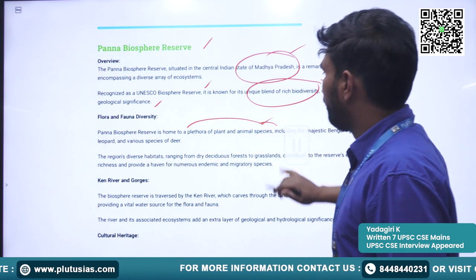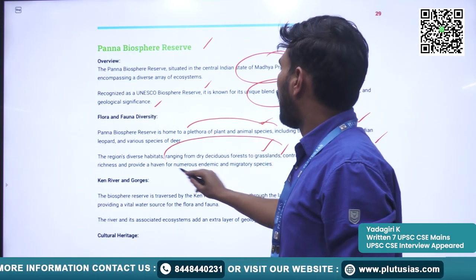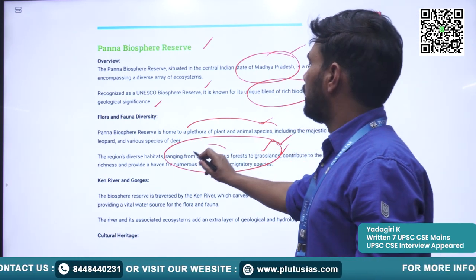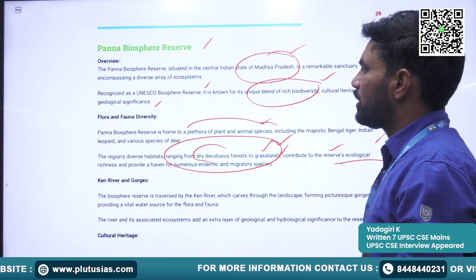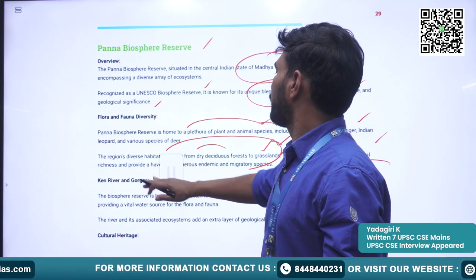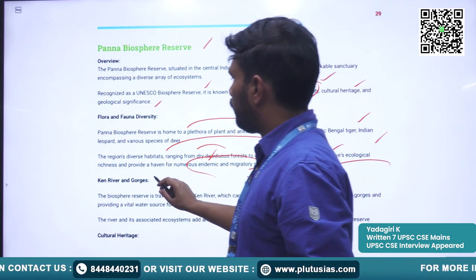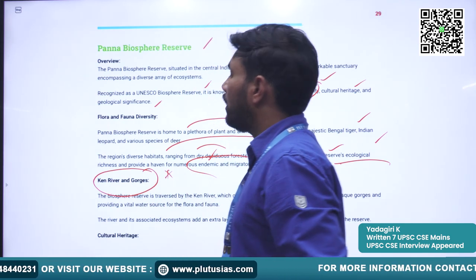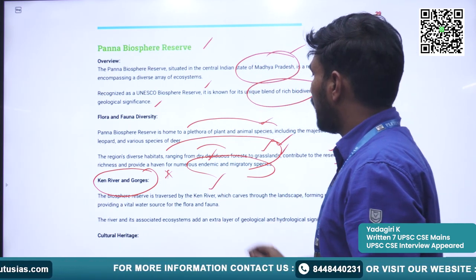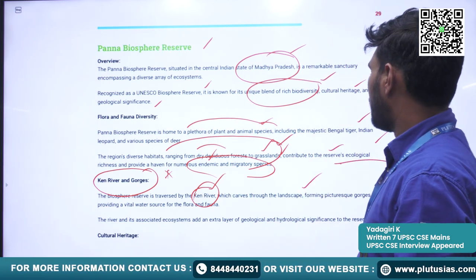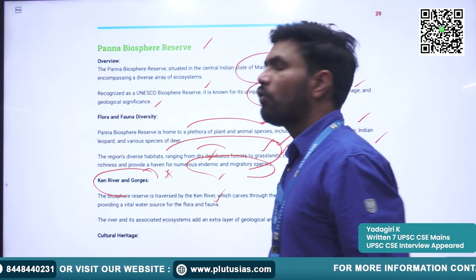Its habitat ranges from dry deciduous forests to grasslands, providing a wide range of landscape. All these contribute to the reserve's ecological richness and provide a haven for numerous endemic and migratory species. One important attraction here is the Ken River — the biosphere reserve is traversed by the Ken River, which flows through the landscape forming picturesque gorges and providing a vital water source for flora and fauna.